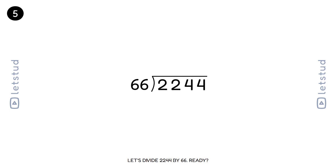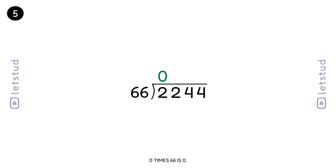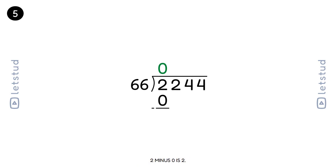Let's divide 2244 by 66. Ready? We start with the first digit, 2. 66 fits into 2 zero times. 0 times 66 is 0. 2 minus 0 is 2.